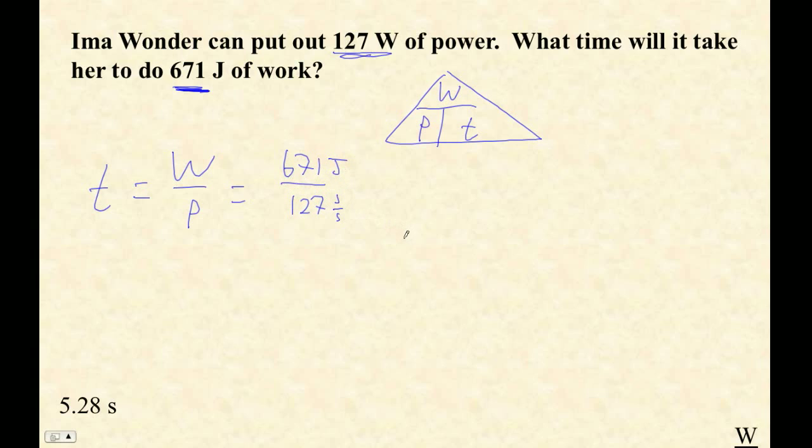671 divided by 127, it's going to take 5.28 seconds. Look at that.